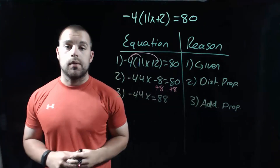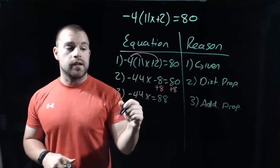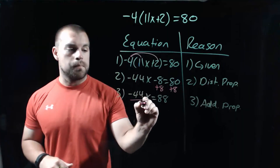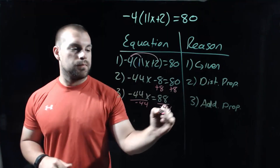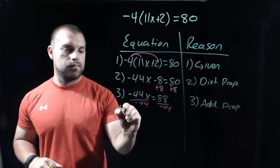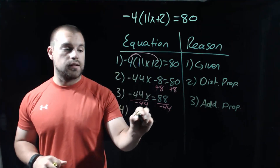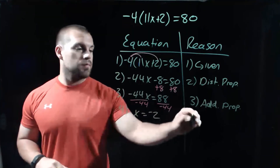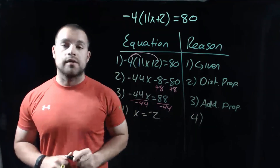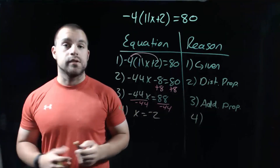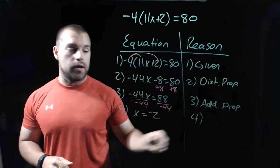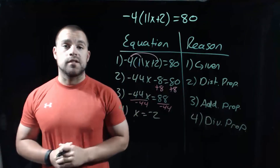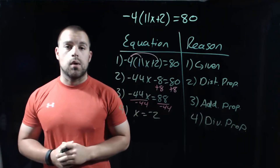The last thing we need to do to get x all by itself is divide by negative 44. So the answer we get at the end is x equals negative 2. And our reason for that last step was the division property. That's going to be it for this video. Thanks for watching.